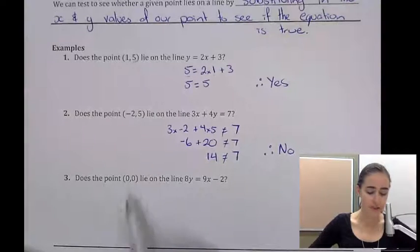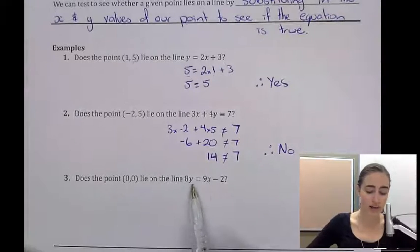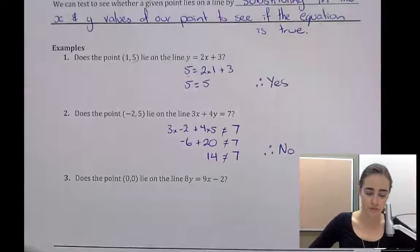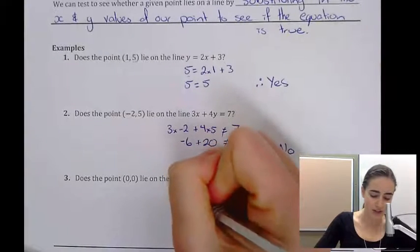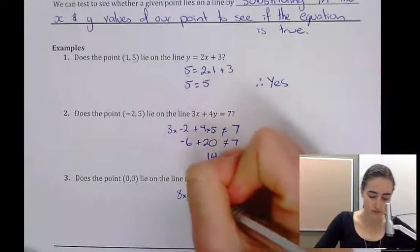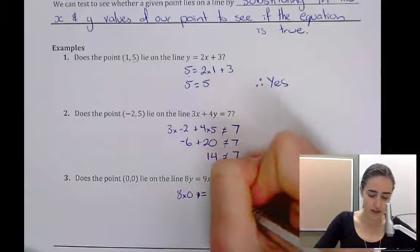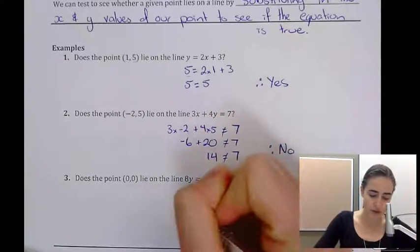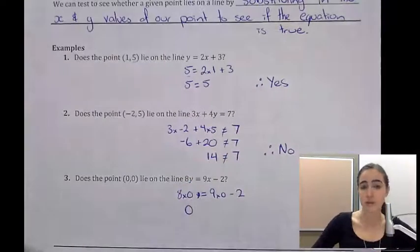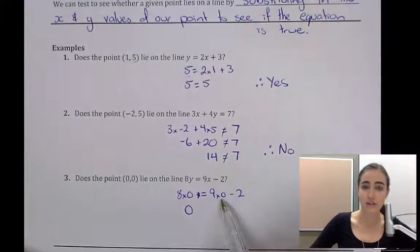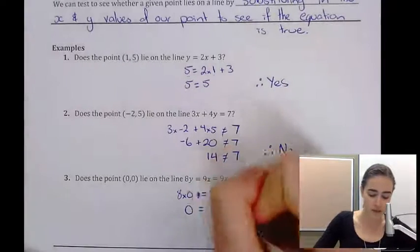Our last one: does the point (0, 0) lie on the line 8y equals 9x minus 2? We would have 8 times 0 equals 9 times 0 minus 2. So we'd end up with 8 times 0 is 0, 9 times 0 is 0, minus 2 would be minus 2.